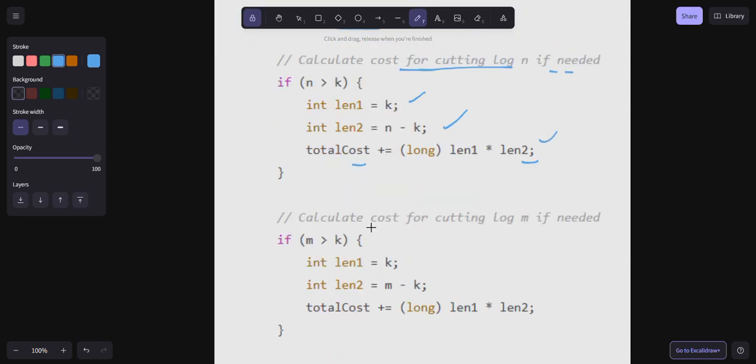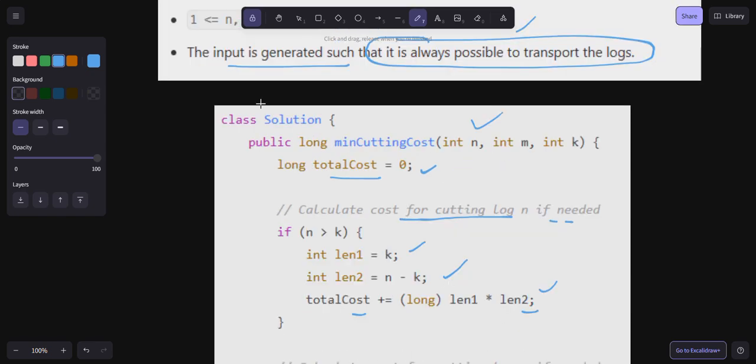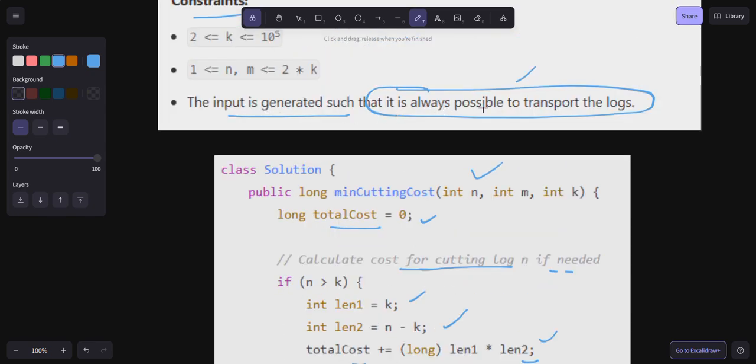Then we will check the cost for cutting log m if needed. If m is greater than k, then we calculate length1 and length2, and then calculate the total cost. The input is generated such that it is always possible to transfer the logs.